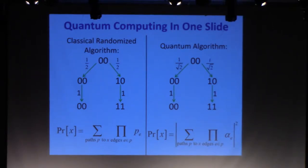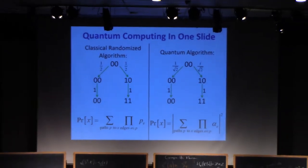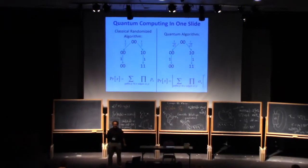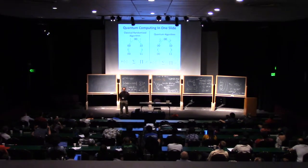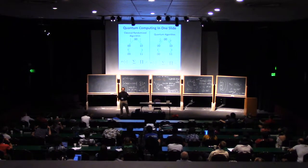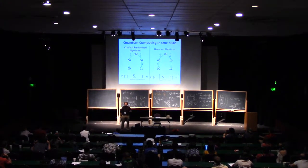Now, a quantum computer is basically exactly the same as everything I just said, except that we're going to replace the probabilities by these complex numbers that we call amplitudes. That's it. An amplitude is a complex number. The state of our computer at any point in time is a unit vector of 2 to the n of these complex numbers, so one amplitude for every possible n-bit string. The operations we can do are any norm-preserving linear transformations on that vector - the unitary transformations that preserve norm.